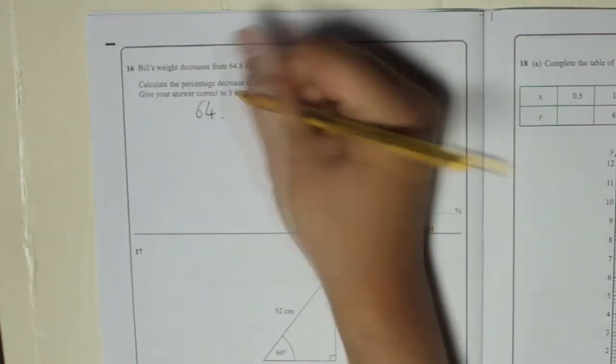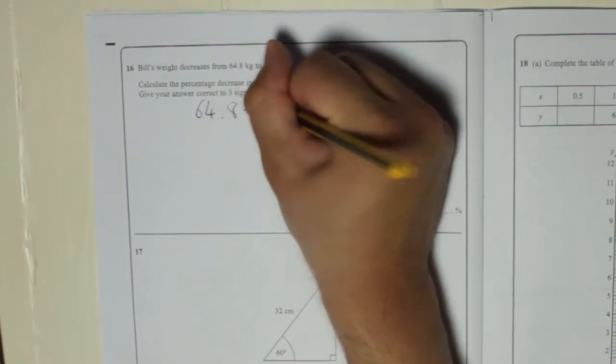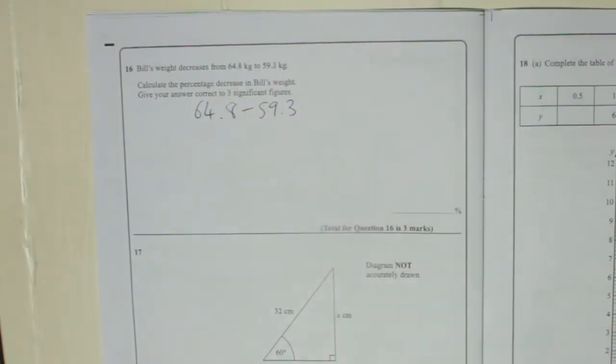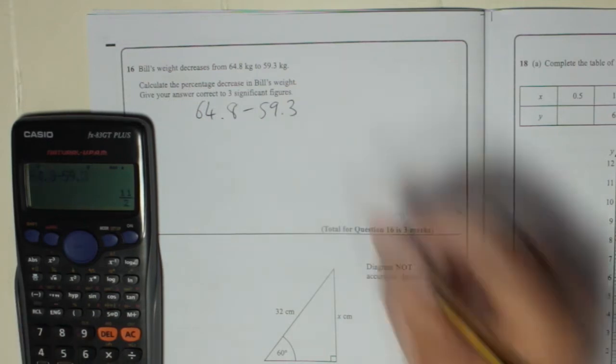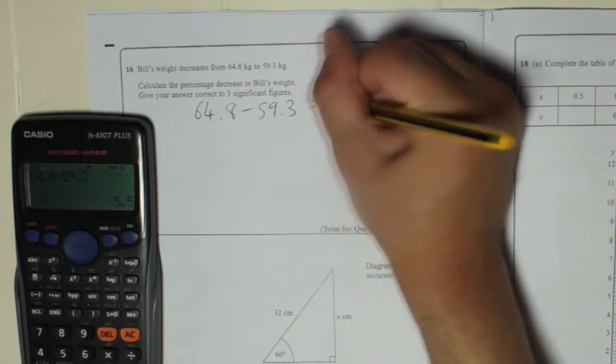So you're going to do 64.8 take away 59.3. 64.8 take away 59.3, which is 5.5.